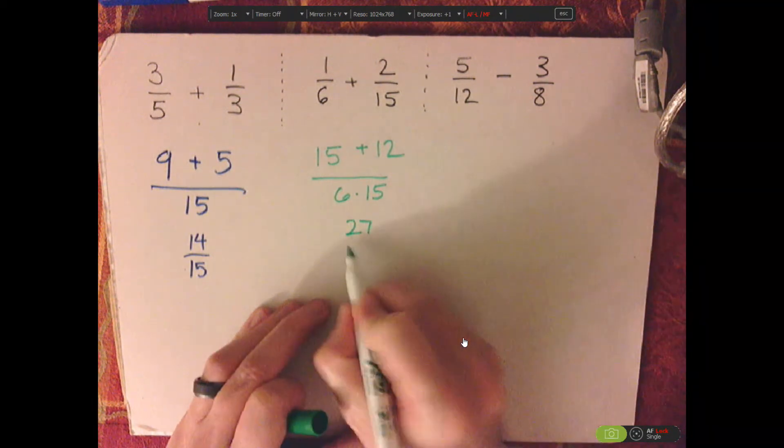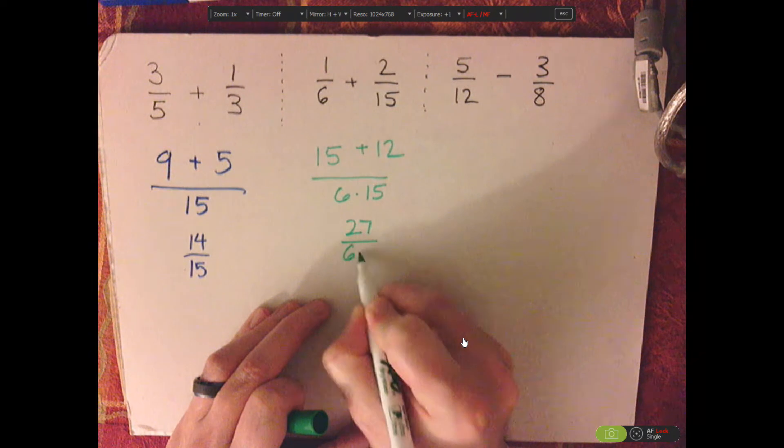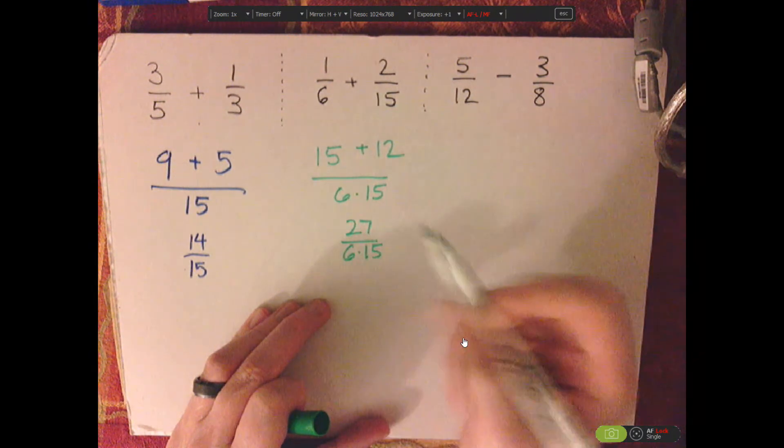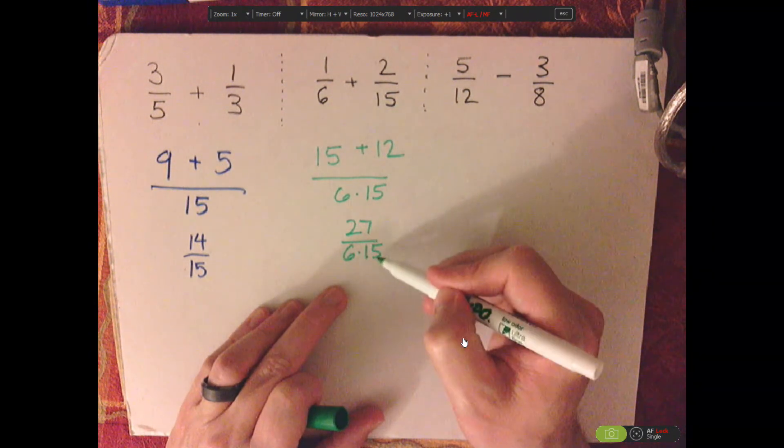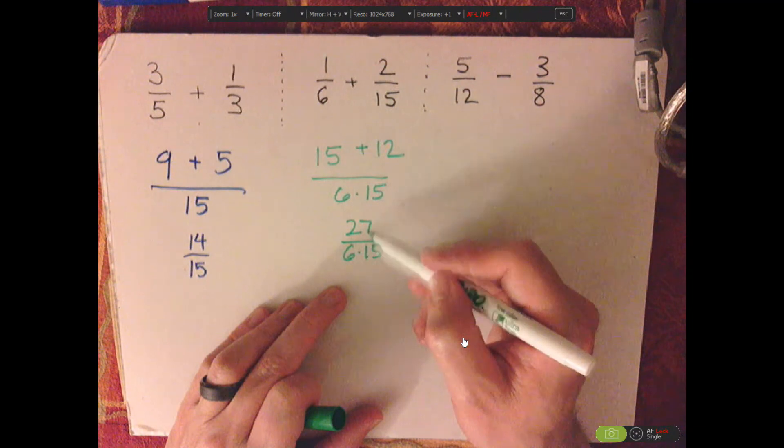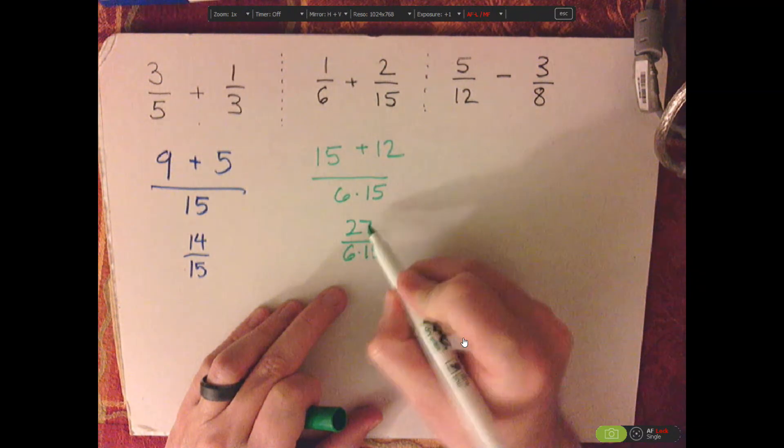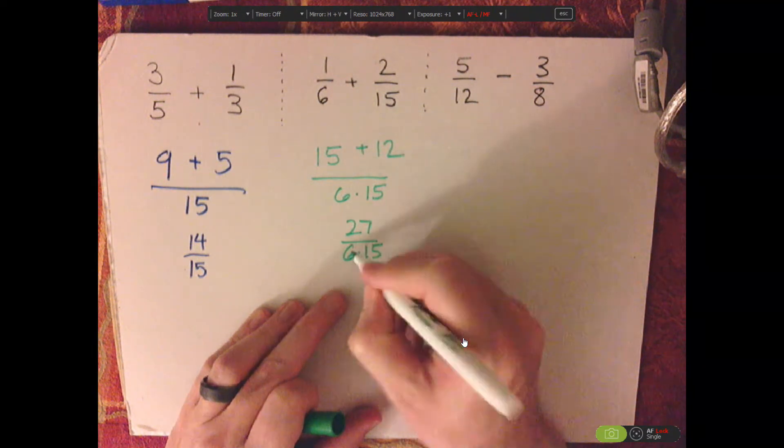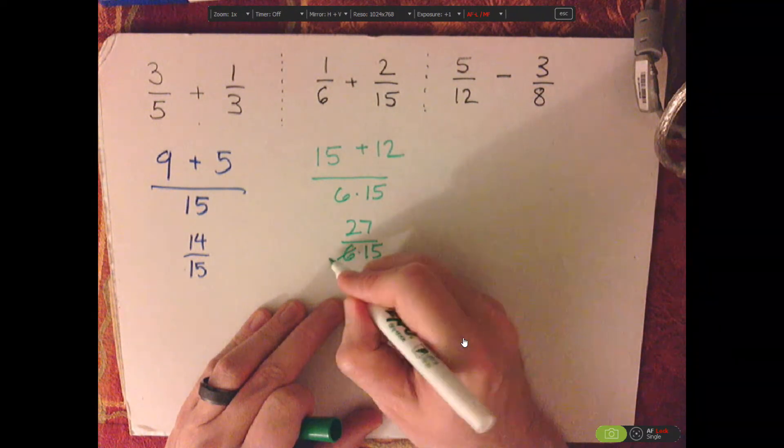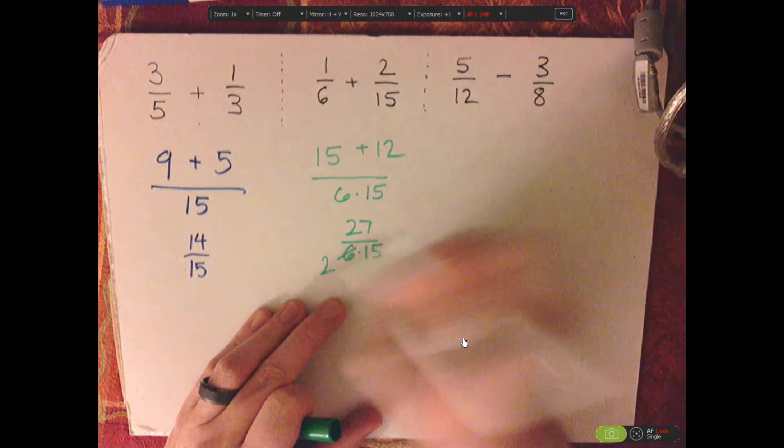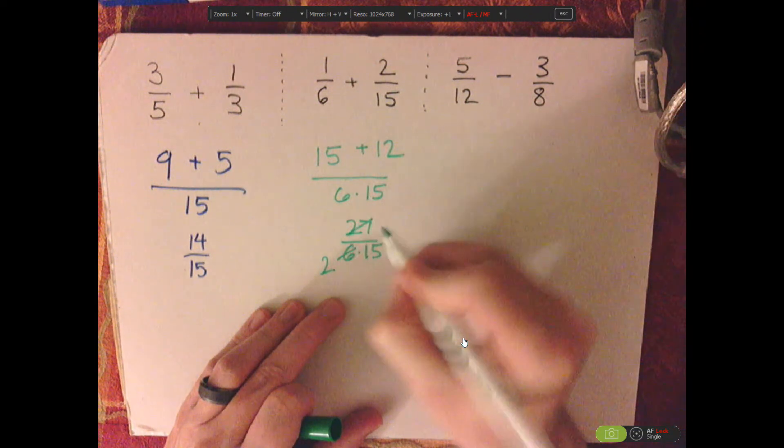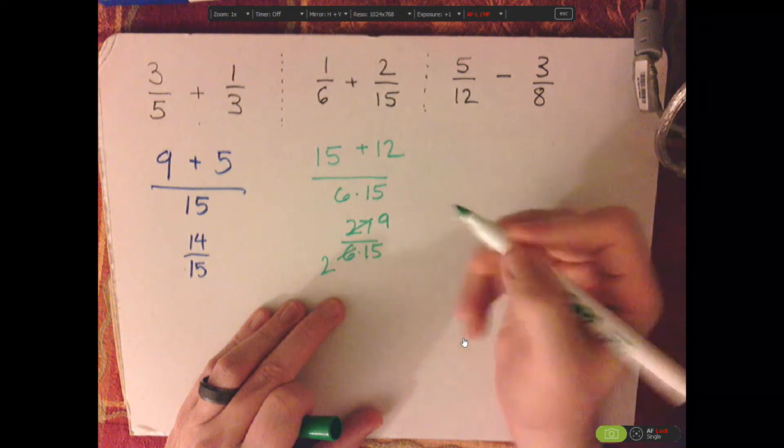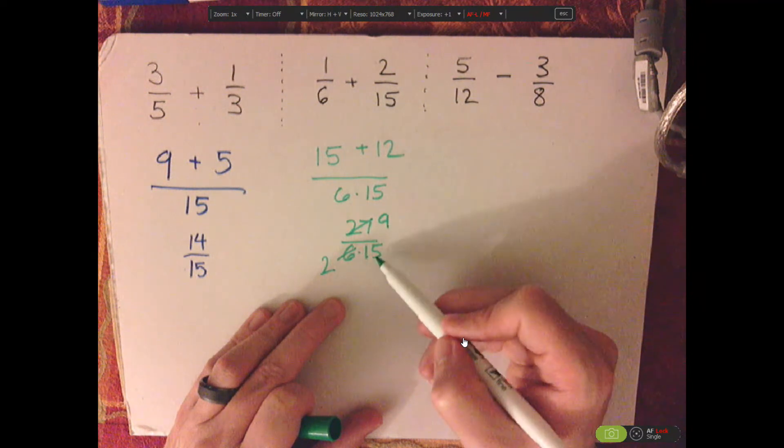So that's 27 over 6 times 15. Now we have factors, and now we can cancel things out with the 27. So 3 goes into both 6 and 27. So 3 goes into 6 twice. 3 goes into 27 nine times. I can do the same thing with this 15.